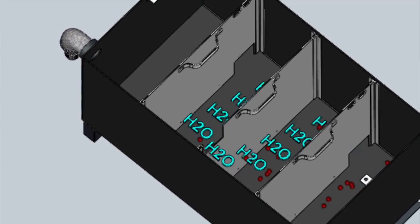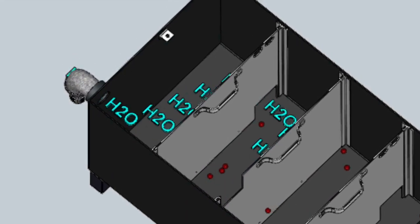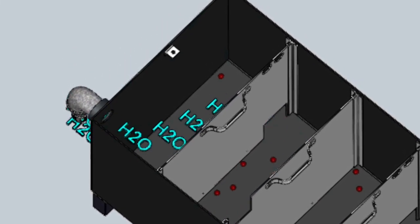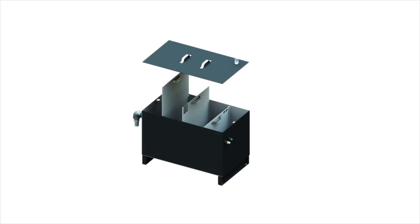This causes particulate to drop to the bottom, as shown with the red dots. Clean coolant discharges from the overflow back to the machine tool tank. Collecting the sludge in this tank means your machine tool tank will stay cleaner.